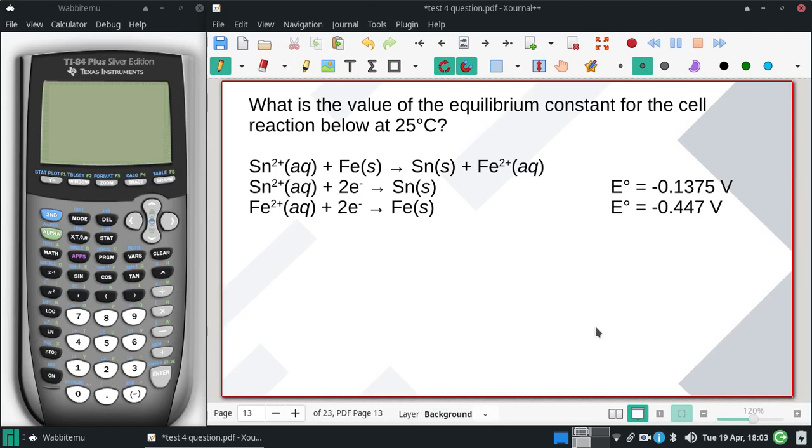What is the value of the equilibrium constant for the following equation at 25 degrees Celsius? My balanced equation has tin ions and iron solid. And since that tells us that the iron solid gets reversed, that will be our anode.